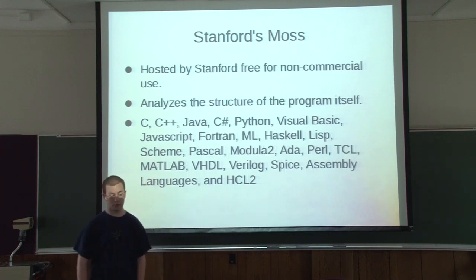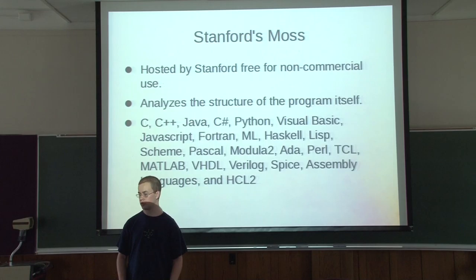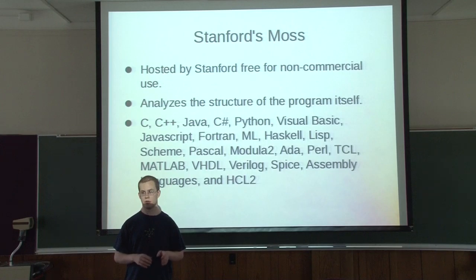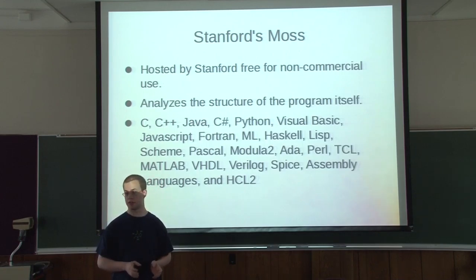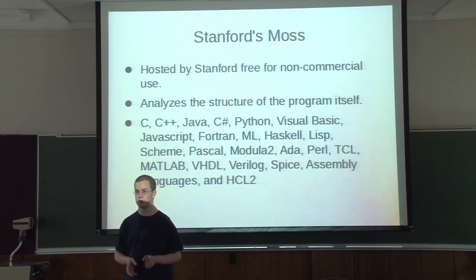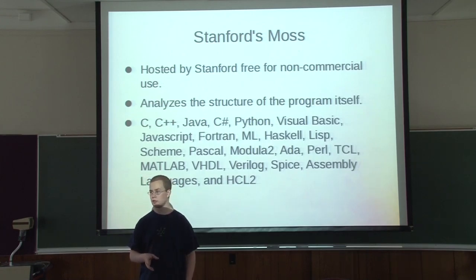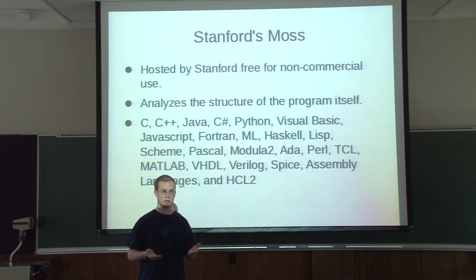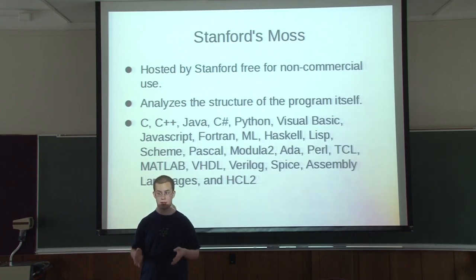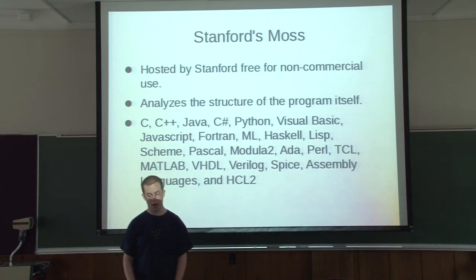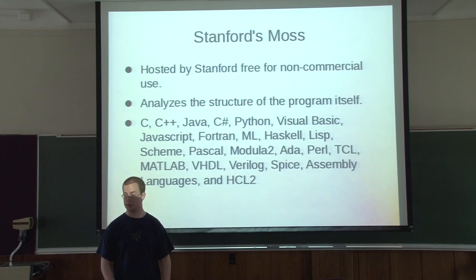The next one, which is a really big one, is Stanford's Moss. It's hosted by Stanford and free for non-commercial use. You upload a batch of assignments and it does comparisons on them, just like Jplag does. Both of these only do comparisons based on what you send them — they don't look at anything else you've sent before, and they don't look at anything online. Moss operates a lot differently than Jplag: it actually looks at the structure of the program — it parses it. That's a for loop, that's a bracket, that's a string literal — and it gets into almost the sentence structure of the code itself. It uses that for comparison, with the idea that your code structure and another person's should be different for most of your program. If you have a lot of similarities, two people probably collaborated. And it supports a pretty impressive array of languages — pretty much almost anything someone would be teaching nowadays.